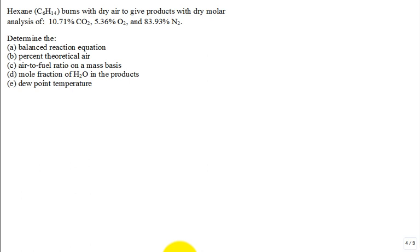So we have this hexane C6H14. Determine the balanced reaction equation. Well, first of all, get the 100% theoretical air.